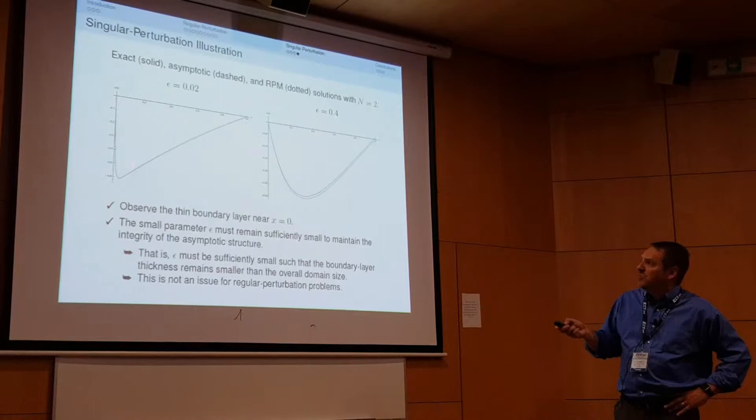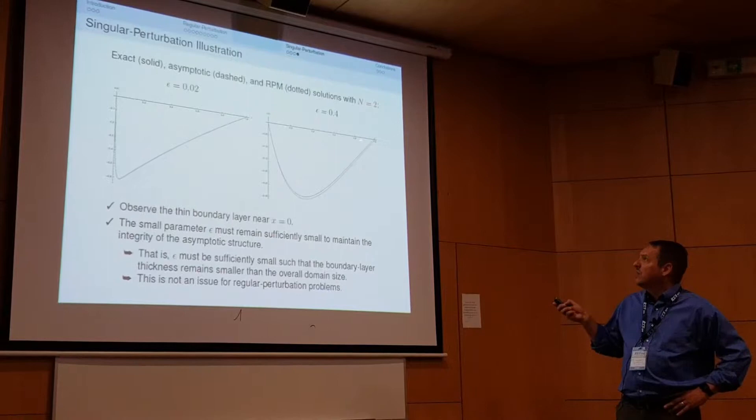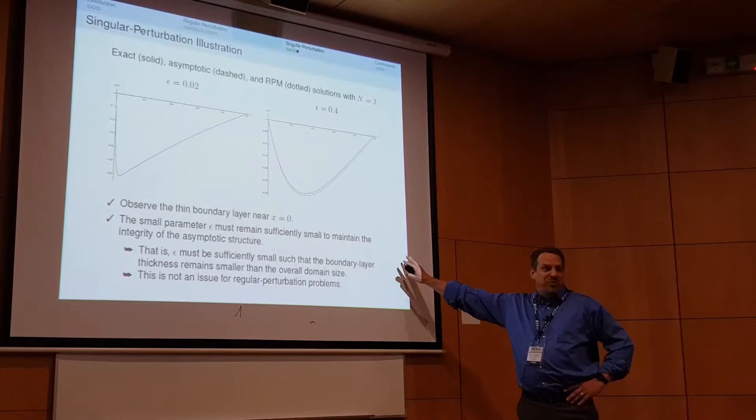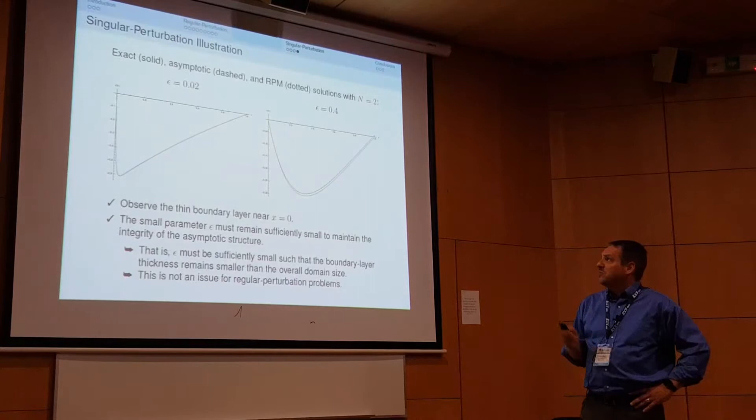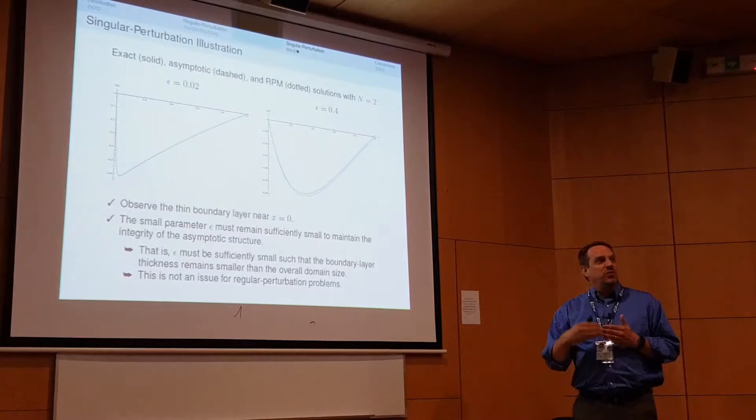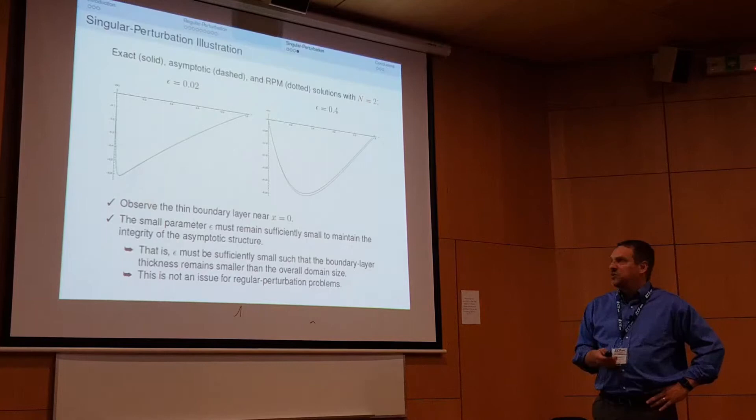The solution plotted for epsilon equals 0.02 shows a thin boundary layer on the left side near zero. For epsilon equals 0.1, the boundary layer is thicker. As epsilon increases further, the boundary layer is no longer thin and the singular perturbation approximation breaks down — that's simply the nature of singular perturbation problems. The real power is that as epsilon gets smaller, you get more accurate solutions with fewer terms, rather than the less accurate solutions with more terms typical of standard projection methods.